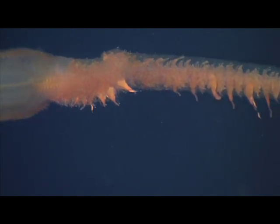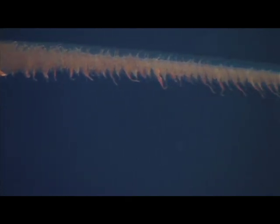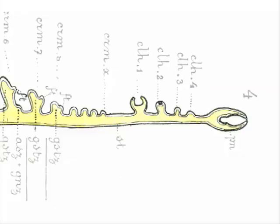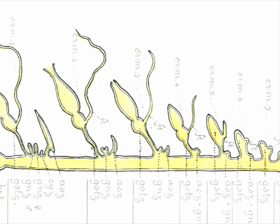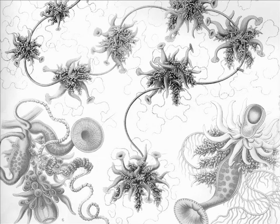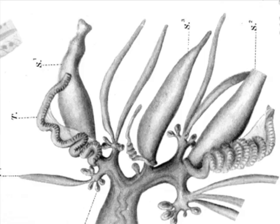Here's Dr. Casey Dunn. So instead of just being a single individual, they're colonial animals. They all grow from the same embryo just through a budding process, and they remain attached and they share a circulatory system. But the really striking thing about siphonophores is that not all of the members of these colonies do the same things.